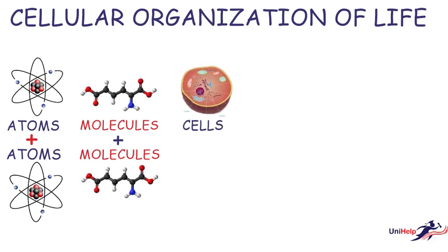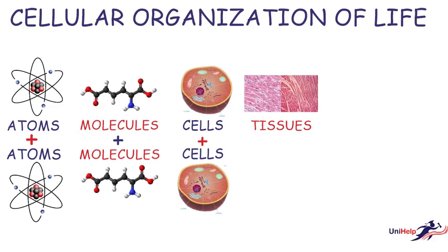When cells combine, they form tissues. The tissues are formed from specialized cells of the same embryonic origin, organized by structure and function. There are four basic types of tissues in animals and three basic types in plants.